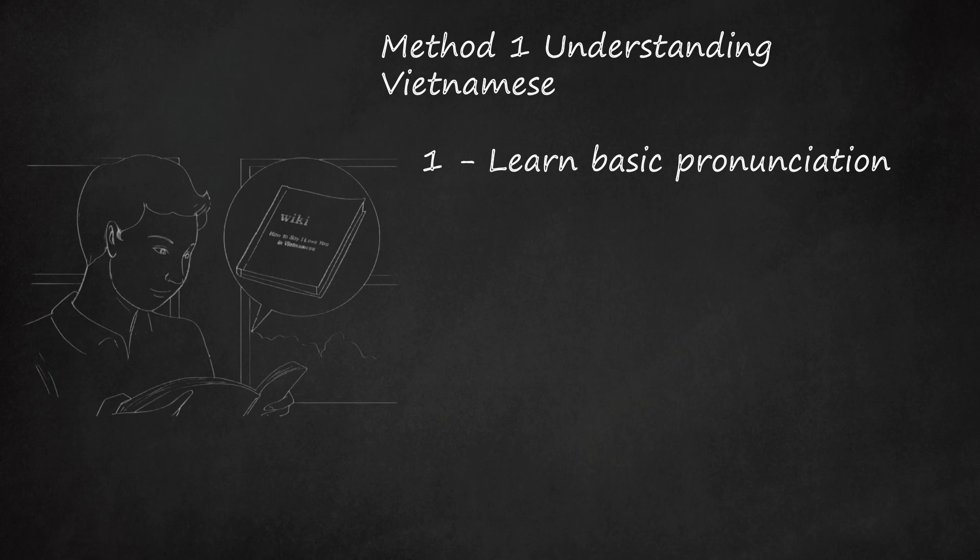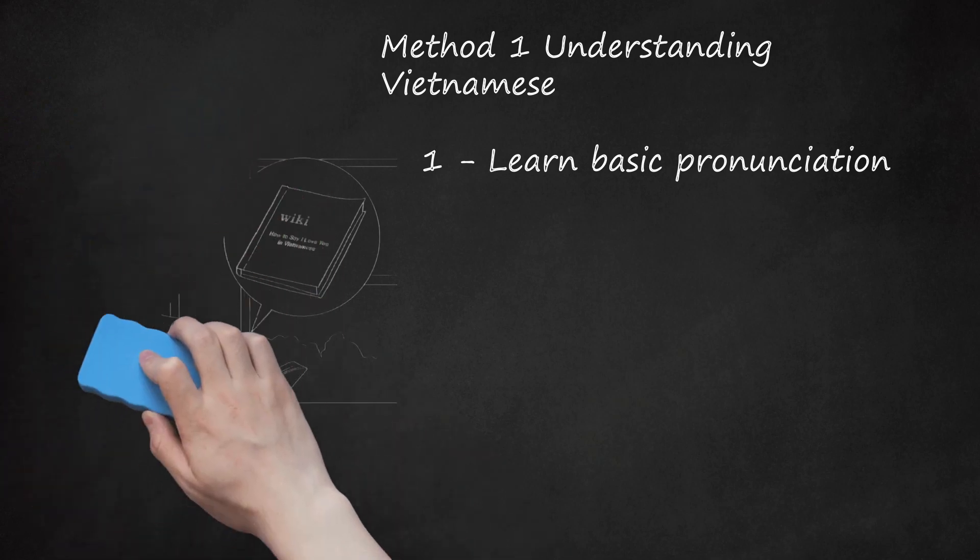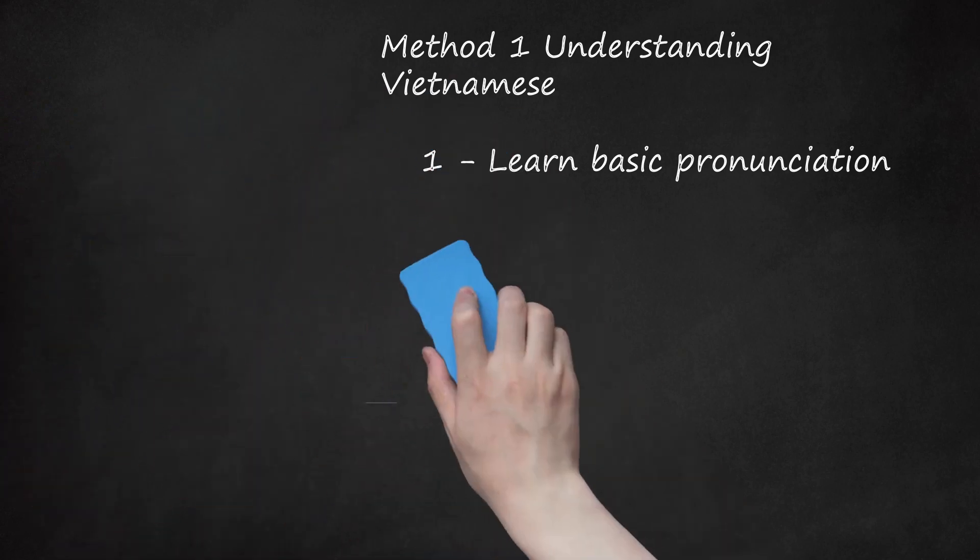The U vowel group is broken down into two pronunciations. U without a pronunciation mark is pronounced like the double O in 'Boo'. With the pronunciation mark Ư, it's pronounced like the first half of 'A'. The letters I and Y are pronounced like the E in 'Me'.